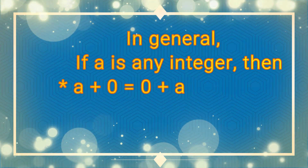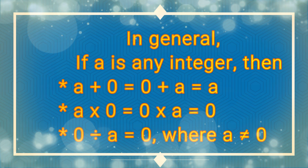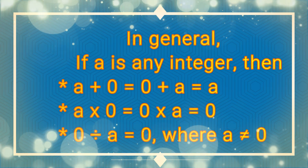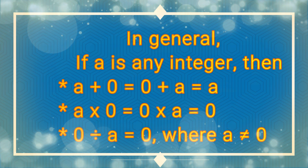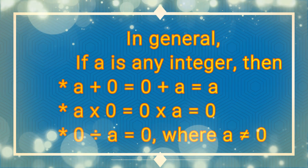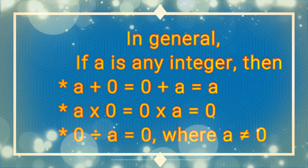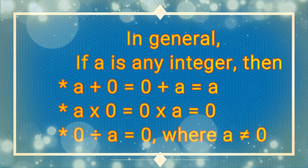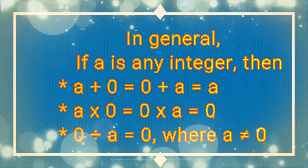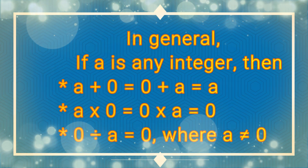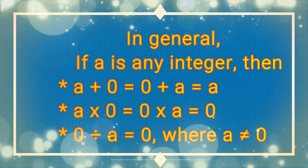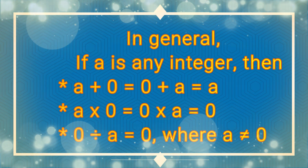So in general, if A is any integer, then A plus 0 equals 0 plus A, which equals A. In multiplication, A times 0 equals 0 times A, which equals 0. And lastly, 0 divided by A equals 0, where A is not equal to 0.